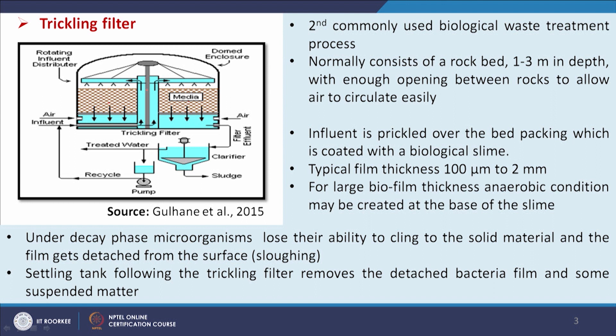After degradation of the organic compounds, the water is collected and then goes to the clarifier, and then sludge and water go for further tertiary treatment. This is the second commonly used biological waste treatment process, normally consisting of a rock bed 1 to 3 meters in depth with enough opening between rocks to allow air to circulate. Influent is trickled over the bed packing, which is coated with a biological slime, and typical film thickness is 100 micrometers to 2 millimeters.